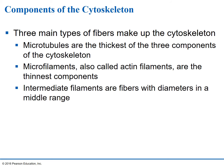Now let's talk about the pieces that make up the cytoskeleton. There are three different types of fibers. Microtubules are the largest or thickest of the three. Microfilaments are the thinnest — also called actin filaments. Intermediate filaments are right in the middle, with a diameter somewhere between a microtubule and a microfilament.